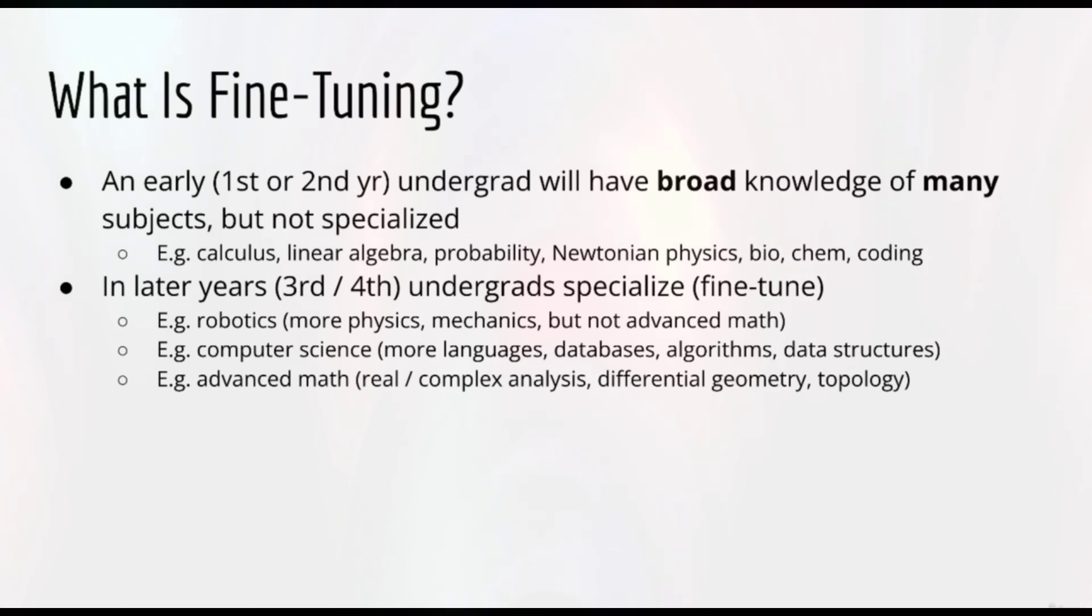But in the later years, these undergraduate STEM students get fine-tuned, based on their particular interests. For instance, an engineer may decide to specialize in robotics. So they'd learn much more about physics and mechanics. Maybe a little more about biology in terms of biomechanics. And maybe some more programming. But they probably won't learn any more advanced math. Similarly, for a computer science student, they will start to specialize in programming. Learning more about different programming languages, algorithms and data structures, databases, web development, cloud, distributed computing, compilers, and so forth.